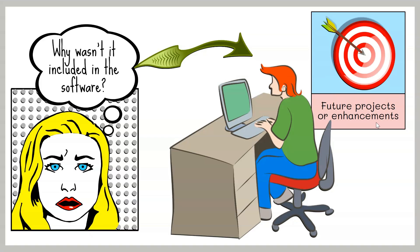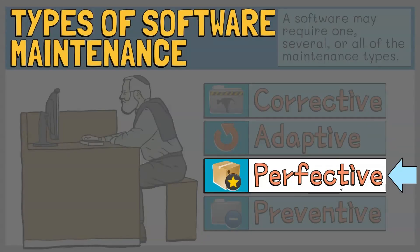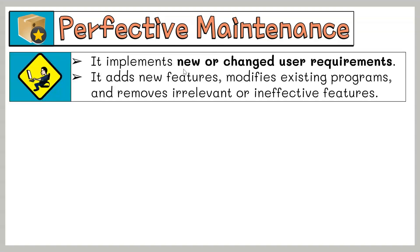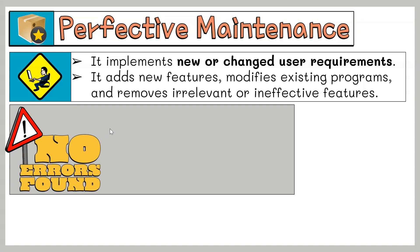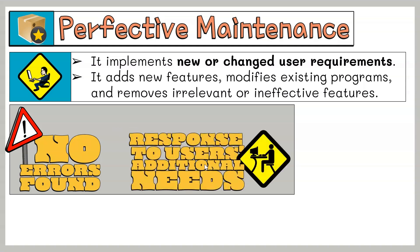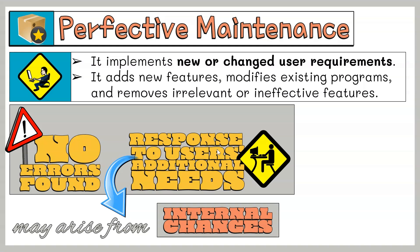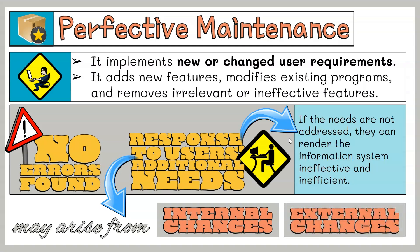This leads us to the next type of maintenance called perfective maintenance. Perfective maintenance involves implementing new or changed user requirements. It includes adding new features, modifying existing programs to improve performance, and removing irrelevant or ineffective features. This can be done even without faults being identified. Such maintenance enhances the functionality, reliability, efficiency, and operability of the system to meet users' changing needs. This type of maintenance responds to users' additional needs, which may arise from changes within or outside the organization. If not addressed, these changes can render the information system ineffective and inefficient.